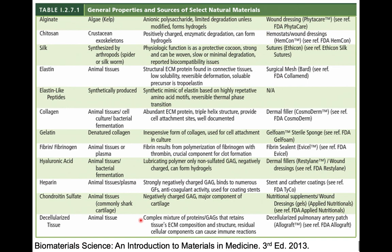This table from the Biomaterials Science book lists a number of different types of natural materials in the left column, with the source of those materials next to it. In the middle are the characteristics of those materials in terms of their chemical structure, as well as their mechanical properties or degradation capabilities. On the right-hand side are some examples of the products that have been developed from them. In terms of the sources of the material, a lot of these materials are obtained from algae, from animals, from crustaceans, or they might be synthetic.